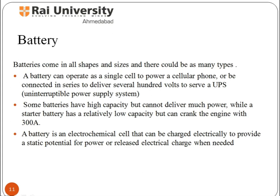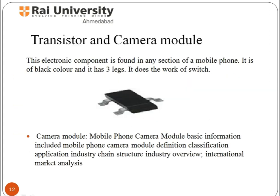Battery: Batteries are portable energy sources featuring three basic components: anode, cathode, and electrolyte. A battery is an electrochemical cell that can be charged electrically to provide a static potential for power, to release electrical charge when needed.